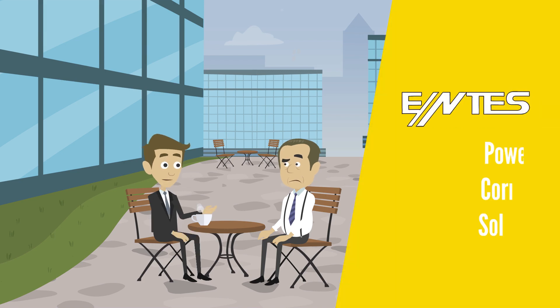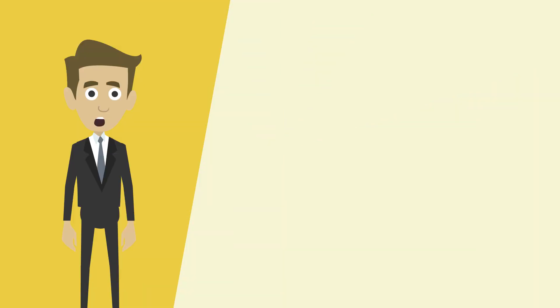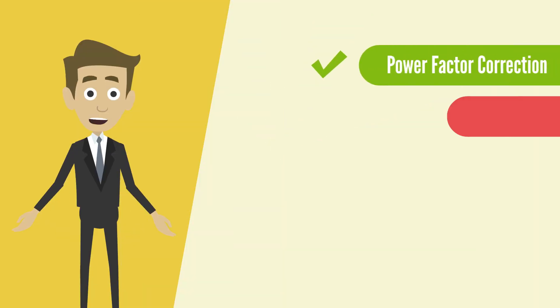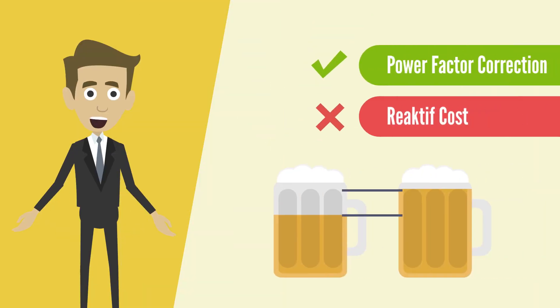I've already told you what a reactive penalty is. Power Factor Correction is there to help you avoid excessive reactive penalties. As you know, there's no beer without head, and more head means more cost.